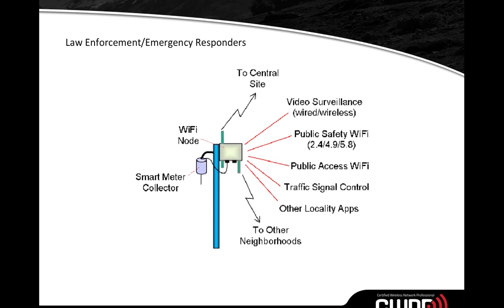The mesh node has a backhaul frequency that takes it back to its central site — typically your RAP, your Root Access Point, which is cabled or connected via fiber to the network. Something very popular in cities now is video surveillance. Law enforcement uses it to help solve crimes, see who was responsible for accidents, find stolen cars, find kidnapped children, and cover all public safety needs. Available frequencies include 2.4 GHz, 5.8 GHz, and the public safety frequency at 4.9 GHz.